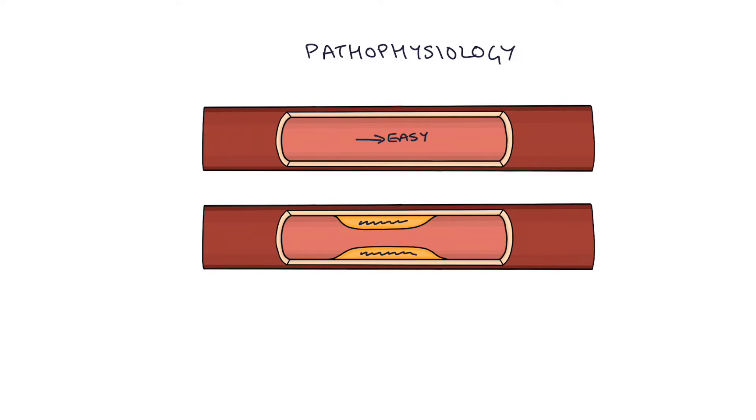in the artery wall causes lipids or fats to attach themselves to the artery wall and build up, and over time these become fibrotic and hardened. So you end up with what's called stenosis or narrowing of the blood vessel which makes it much more difficult for blood to flow.